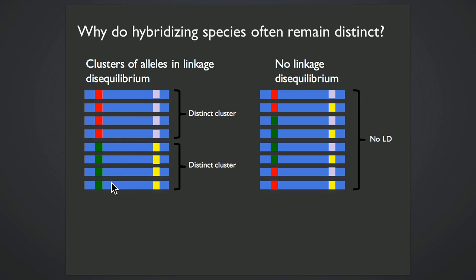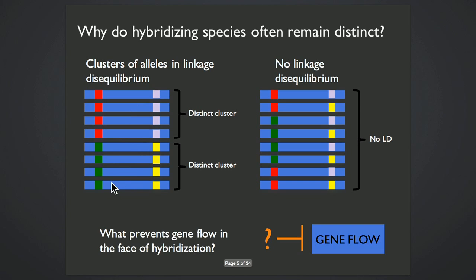When hybridization is occurring, there's the opportunity for recombination to shuffle these clusters and degrade the distinction between the distinct groups. So a big question in studying speciation is why do hybridizing species often persist as distinct species despite these opportunities for gene flow? And what we're really asking is what's preventing gene flow in the face of hybridization?